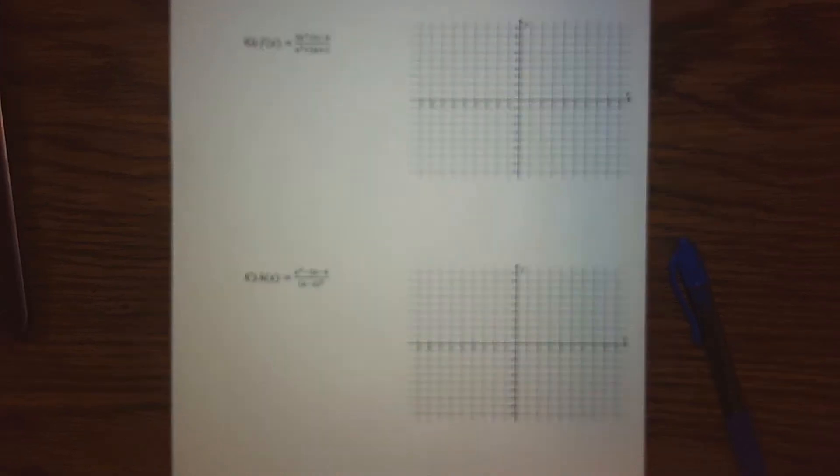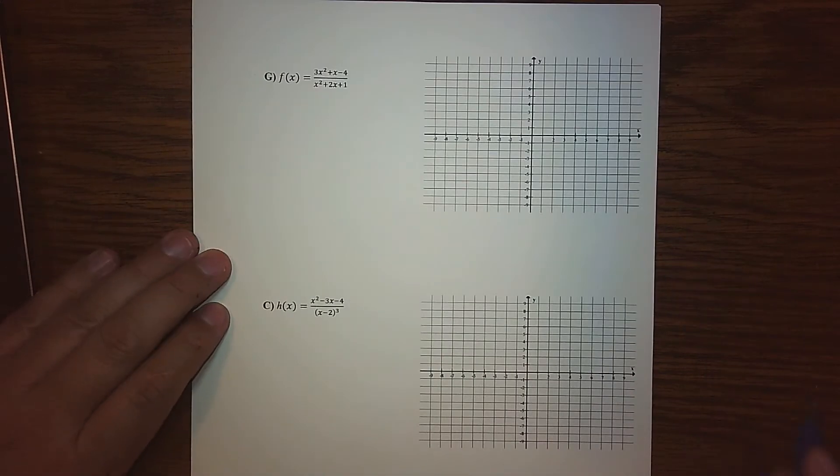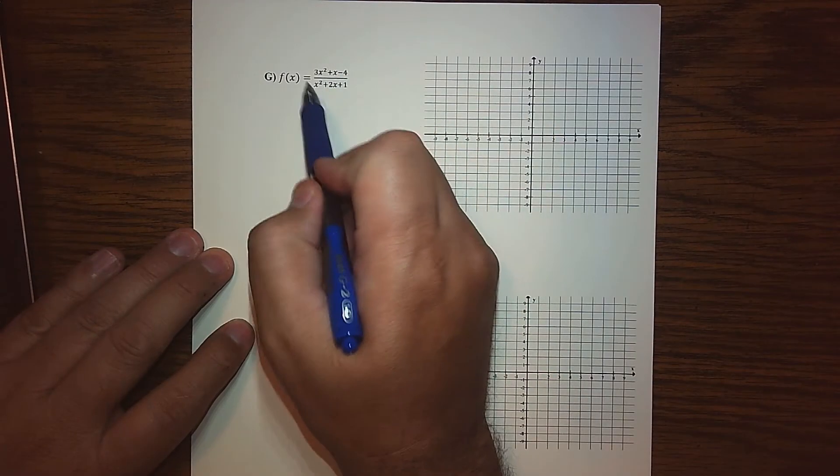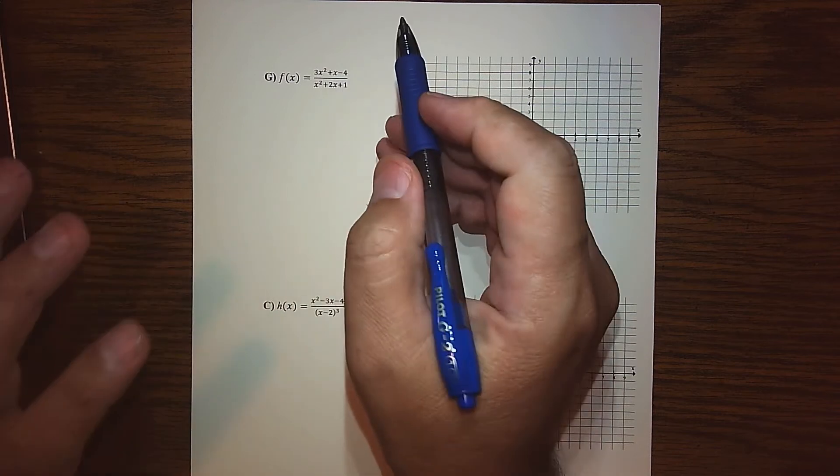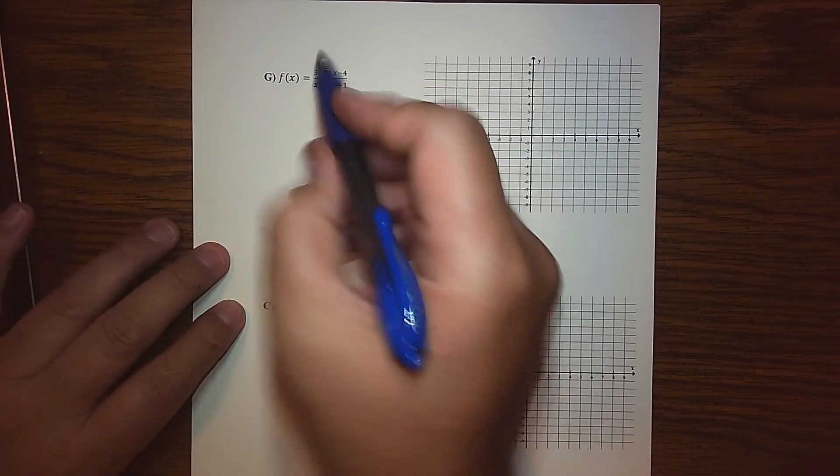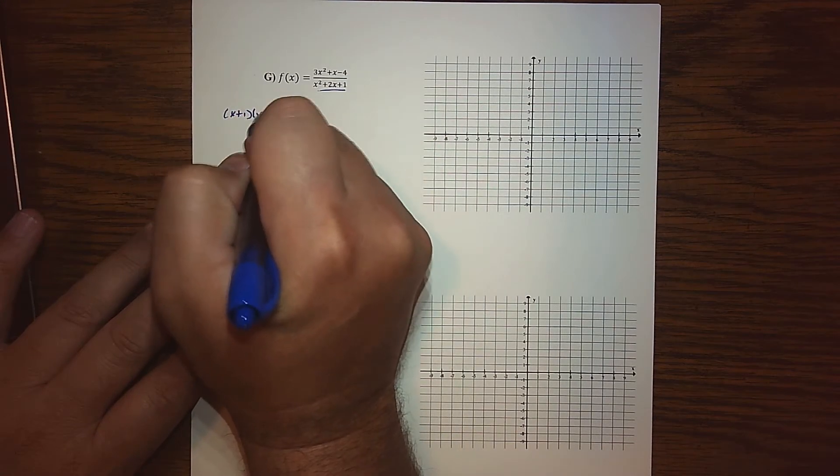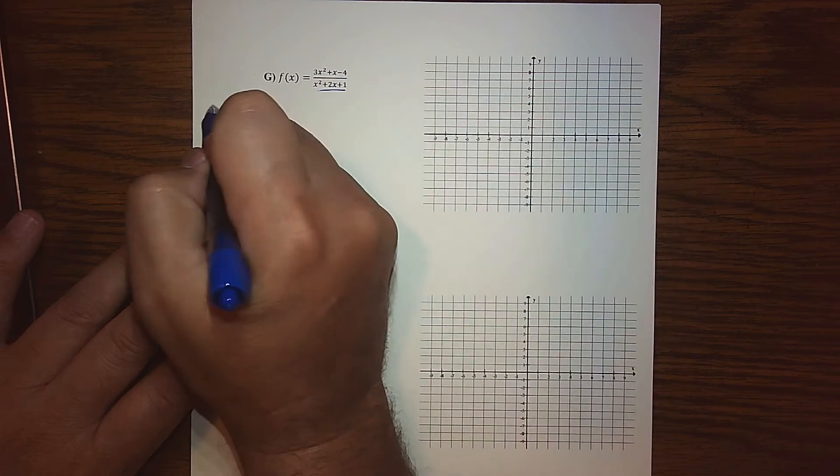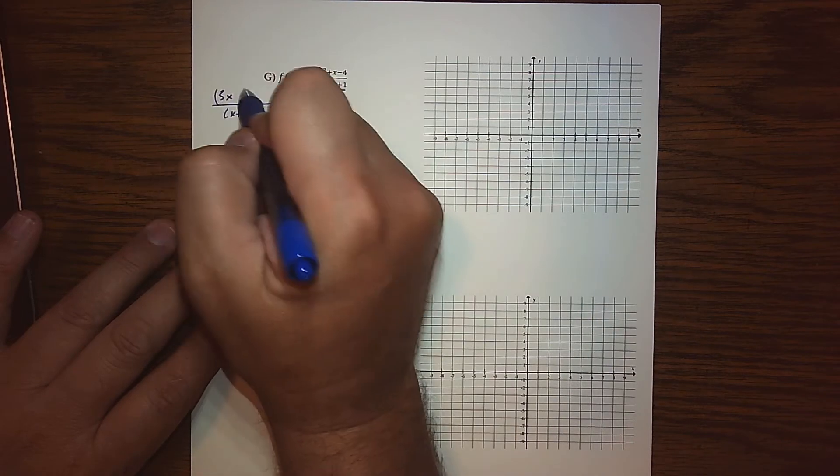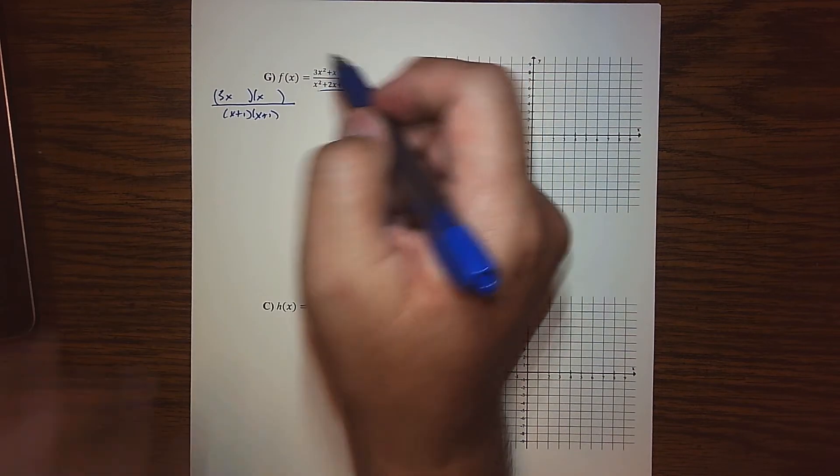So one more round of point plotting here. We're graphing rational expressions, so again we begin everything by looking at the zeros upstairs and downstairs, which requires factoring. On the bottom, if we factor that, that's x plus 1 times x plus 1. Upstairs I have 3x and x, and I think we'll be good with a 4 and 1, plus or minus either way.